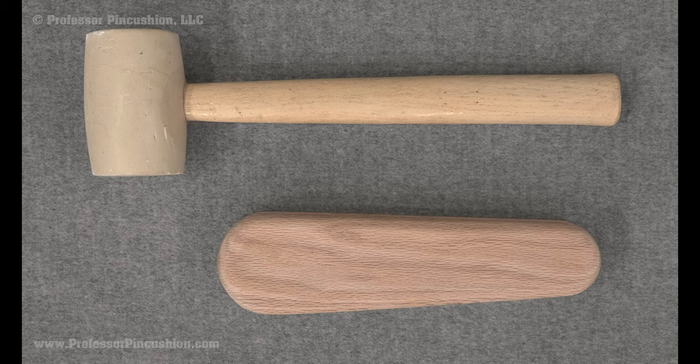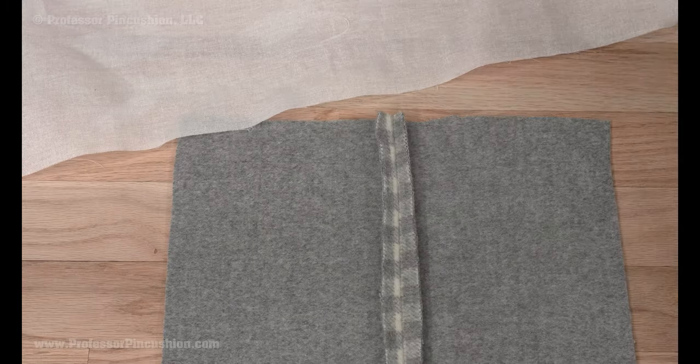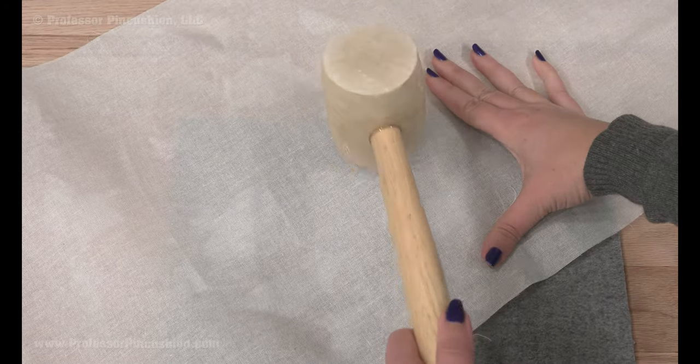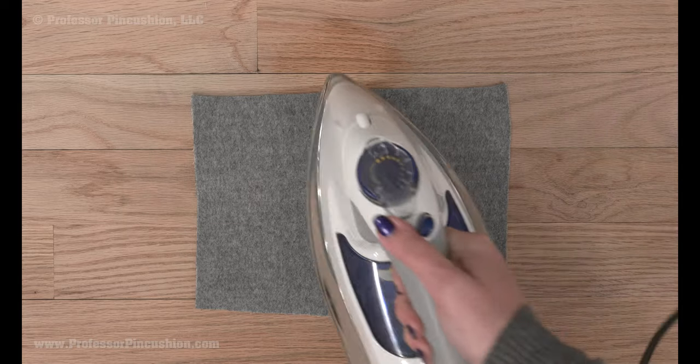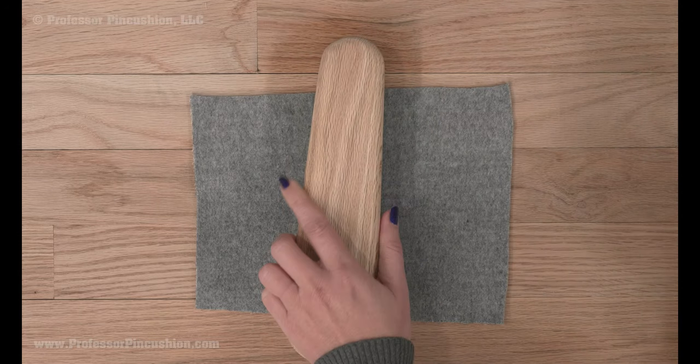You can use a rubber mallet or a tailor's clapper to flatten seams as much as possible. Just make sure you protect your fabric if you use the hammer method by putting another fabric in between. For either of these methods, use steam to soften the fabric fibers and then flatten.